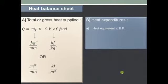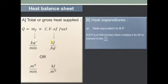Now we will see the heat equivalent to brake power. If brake power is in kilowatts, that is kilojoules per second, then multiply it by 60 to convert it into kilojoules per minute.